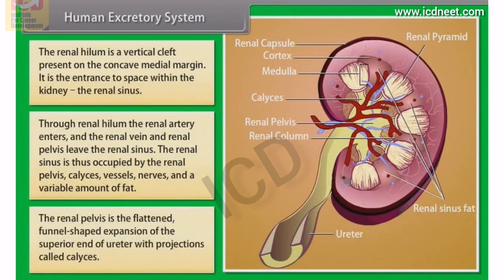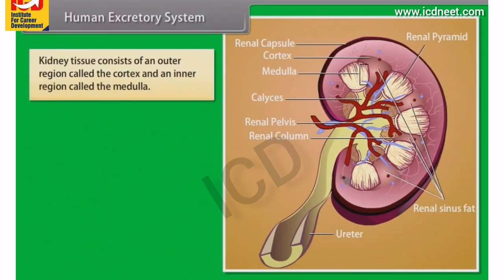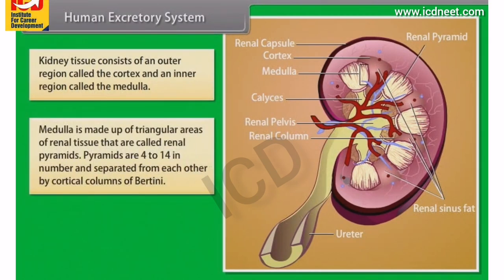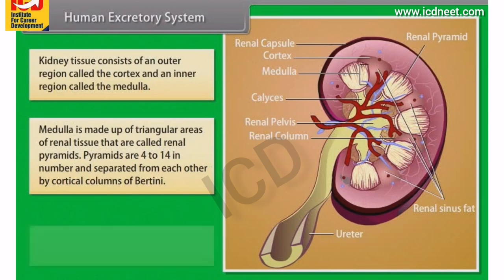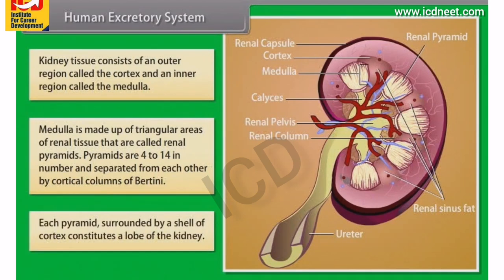The renal pelvis is the flattened, funnel-shaped expansion of the superior end of the ureter, with projections called calyces. Kidney tissue consists of an outer region called the cortex and an inner region called the medulla. The medulla is made up of triangular areas of renal tissue called renal pyramids, which are 4 to 14 in number and separated from each other by cortical columns of Bertin. Each pyramid surrounded by a shell of cortex constitutes a lobe of the kidney.